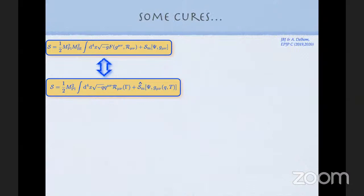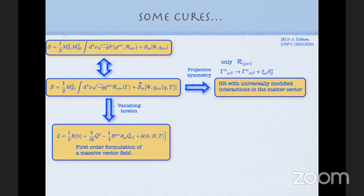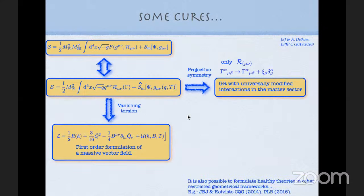There are solutions to these pathologies. One is imposing projective symmetry so the projective mode is a gauge mode, implying only the symmetric part of the Ricci enters — but then you just recover general relativity. Another solution is imposing vanishing torsion, which gives general relativity with some massive vector field. Other solutions involve restricted geometrical frameworks like Weyl geometries. These generally constrain you to either GR or to very specific healthy extensions.